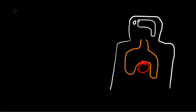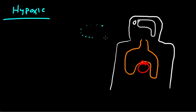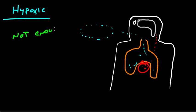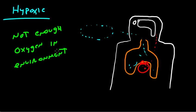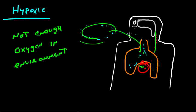Another type is hypoxic hypoxia. Hypoxic hypoxia is very simple — you don't have the oxygen outside the body that you need. With no oxygen available outside the body, it can't be breathed in. There's nothing available for the lungs, very little oxygen getting absorbed, and very little oxygen coming up to the brain. Hypoxic hypoxia is simply not enough oxygen in the external environment.